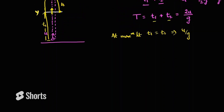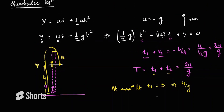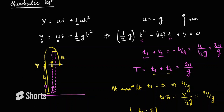Another application of quadratic equations: the product of roots t₁ × t₂ = c/a = y/(½g) = 2y/g. Using both t₁ + t₂ and t₁t₂, you can also calculate |t₂ − t₁|, which is the time difference between when the particle passes through the same position going up versus coming down. That is your homework — please write in the comments how you solved it. Another application is in projectile motion, where you write the equation of the trajectory as y = x·tan θ − gx²/(2u²cos²θ).